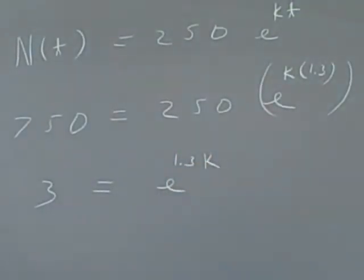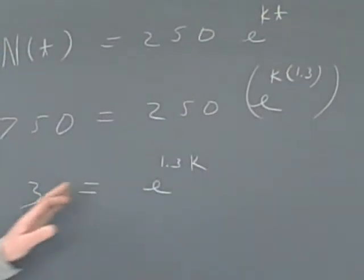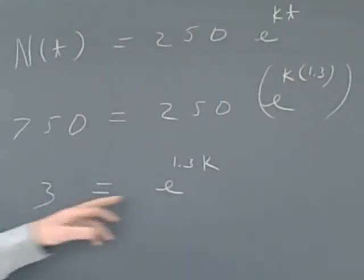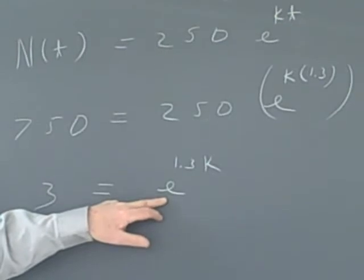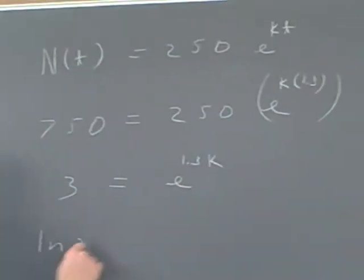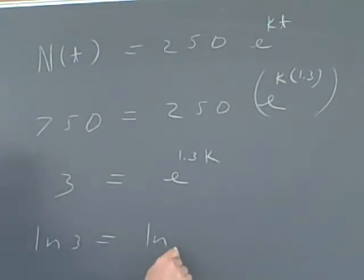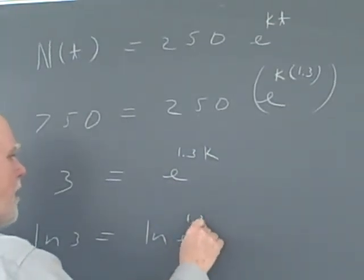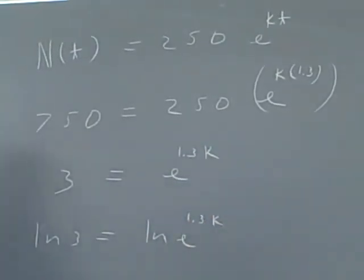So now we've got our exponential term isolated. Now I take the log of both sides, so I take the log of 3. This equals the log of e to the 1.3k.